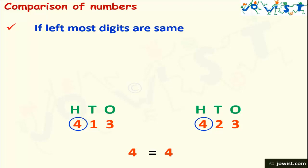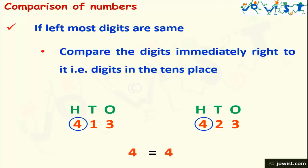Then what should we do? We will start comparing the digits immediately right to it, that is digits in the tens place. In 413, one is in the tens place, and in 423, two is in the tens place. Here, two is greater than one. Hence, 423 will be greater than 413.